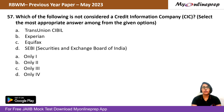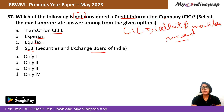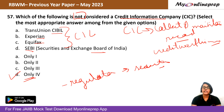Question 57: Which of the following is NOT a credit information company (CIC)? Options: TransUnion CIBIL, Experian, Equifax, or SEBI. CICs collect, maintain, and record credit data used by lenders to assess credit worthiness. TransUnion CIBIL, Experian, and Equifax are all CICs. SEBI — the Securities and Exchange Board of India — is a regulator of the securities and exchange market, not a CIC. The right answer is D — SEBI.